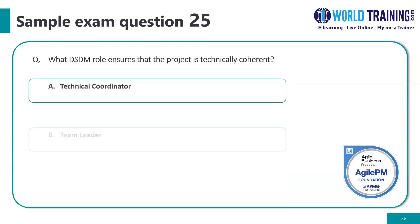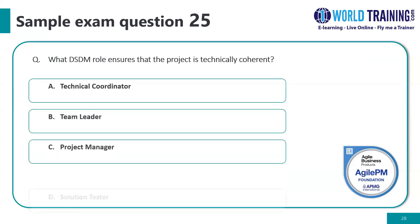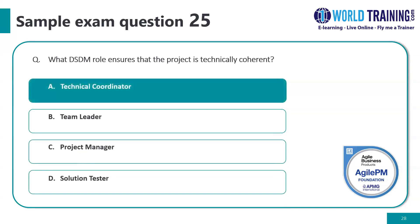Question number twenty-five: what DSDM role ensures that the project is technically coherent? The answer is: a technical coordinator.